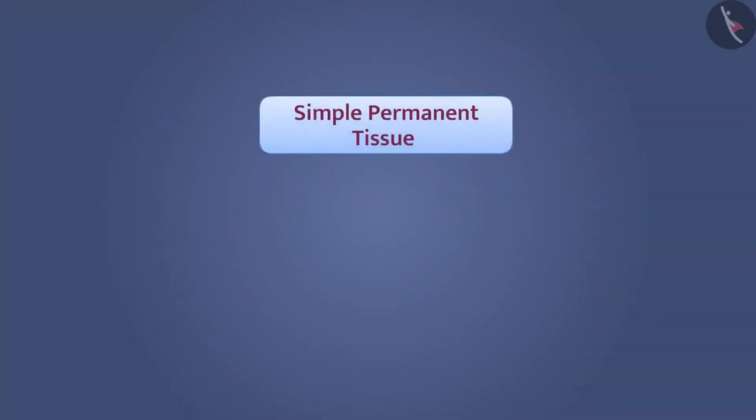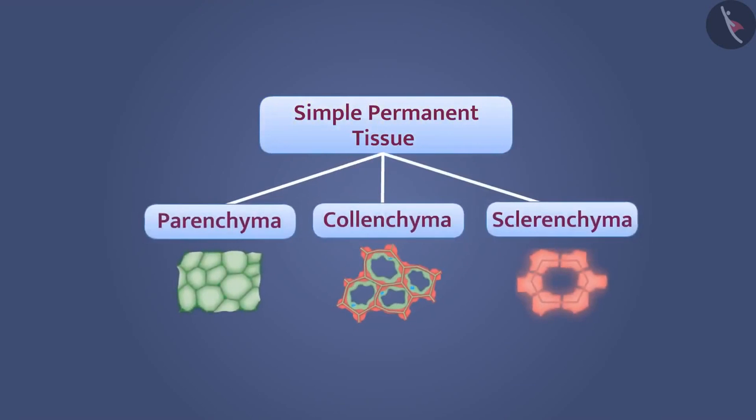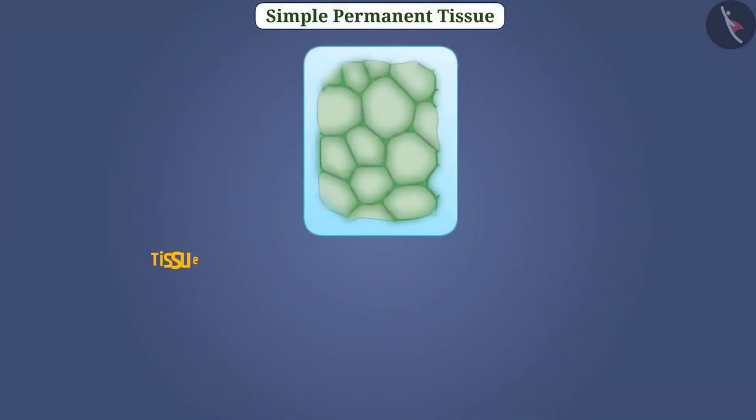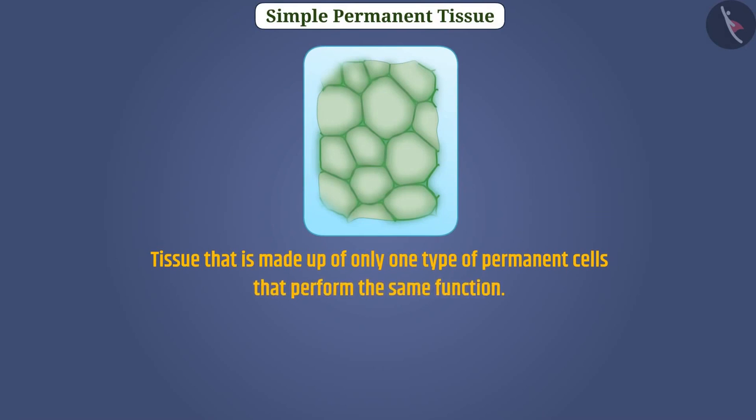In the previous video, we discussed simple permanent tissues and their types. So, let's know about complex permanent tissue in detail. Tissue that is made up of only one type of permanent cells that perform the same function is called simple permanent tissue.